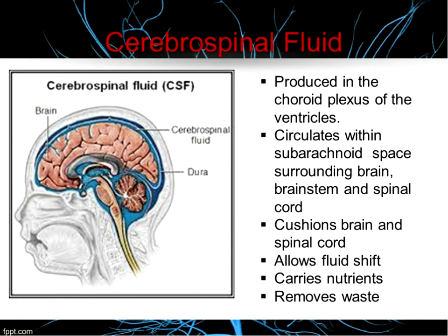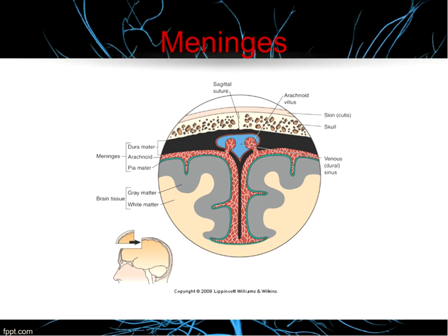The meninges are a fibrous cover of the brain with several different layers. The outermost layer is the dura mater — a thick, gray, inelastic layer. The middle layer is the arachnoid layer, which is very thin and delicate, looks like a spider web, and is white. The arachnoid layer has no blood supply. Within the arachnoid layer are the arachnoid villi that absorb the cerebrospinal fluid.